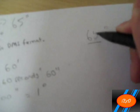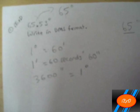So that's your first step. Since DMS format is degrees, minutes, seconds, we have our degrees already, 65. So what's next?